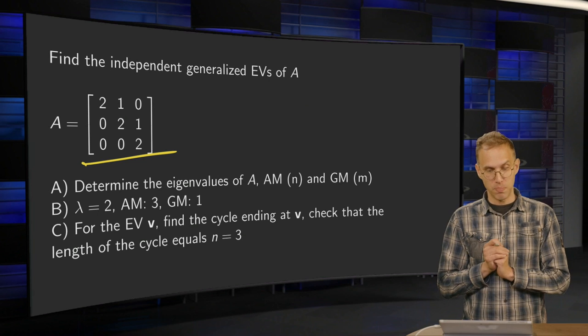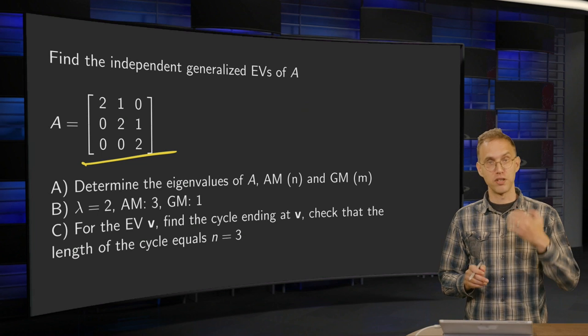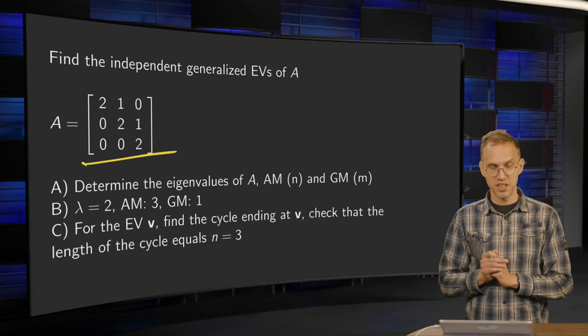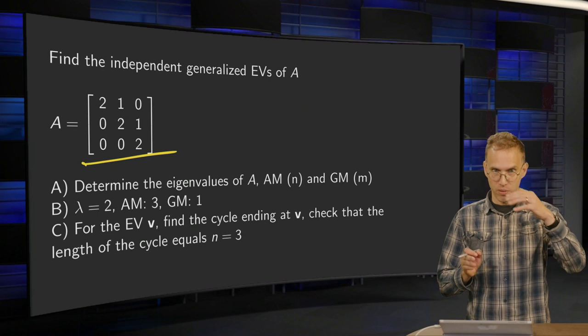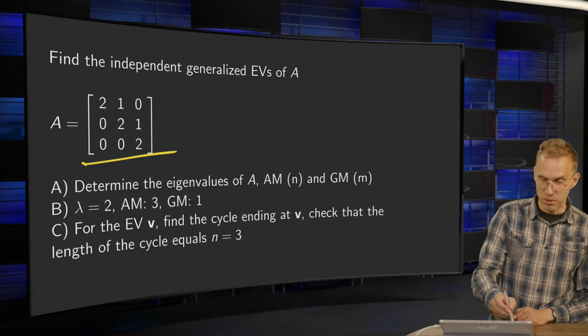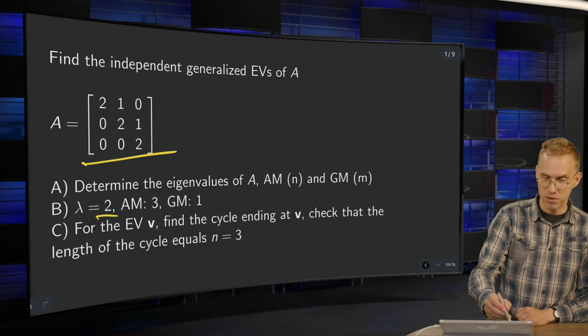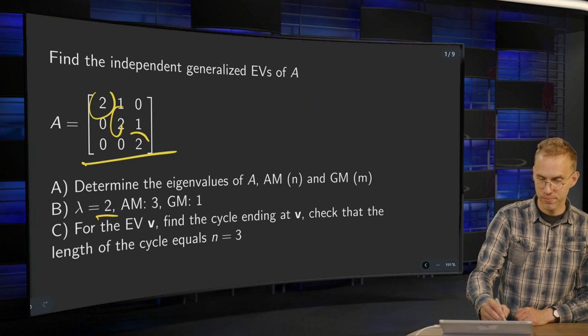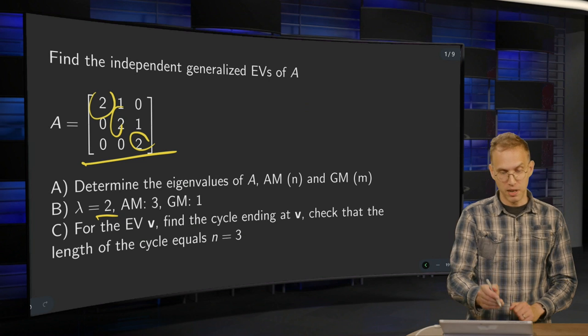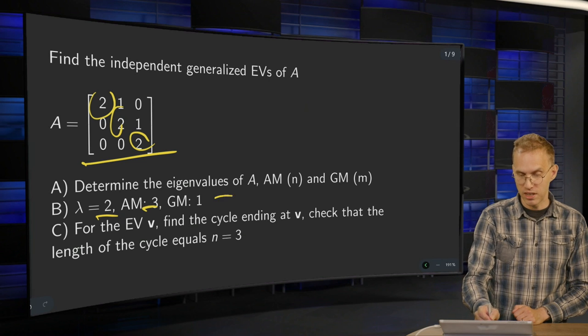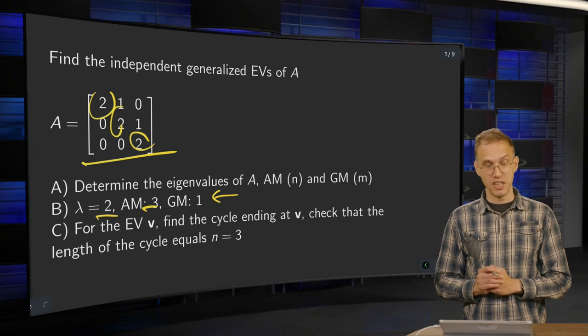So what's the plan? First, find eigenvectors and the multiplicities. I will already tell you that we will only have lambda equals 2. That's easy because we have a triangular matrix with algebraic multiplicity 3. And we will see that its geometric multiplicity equals 1.